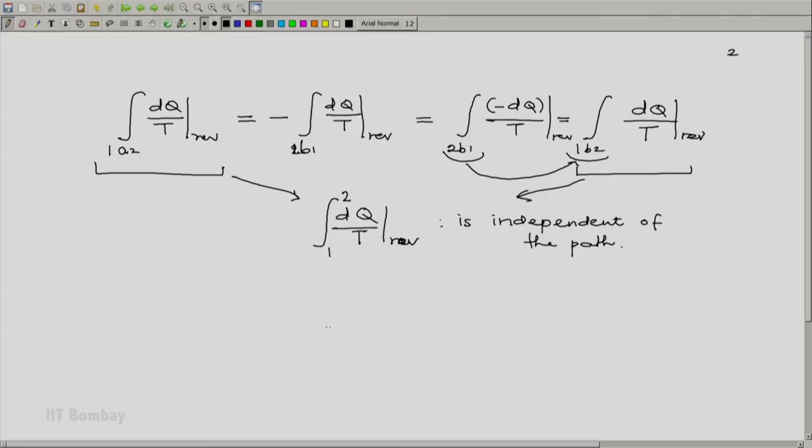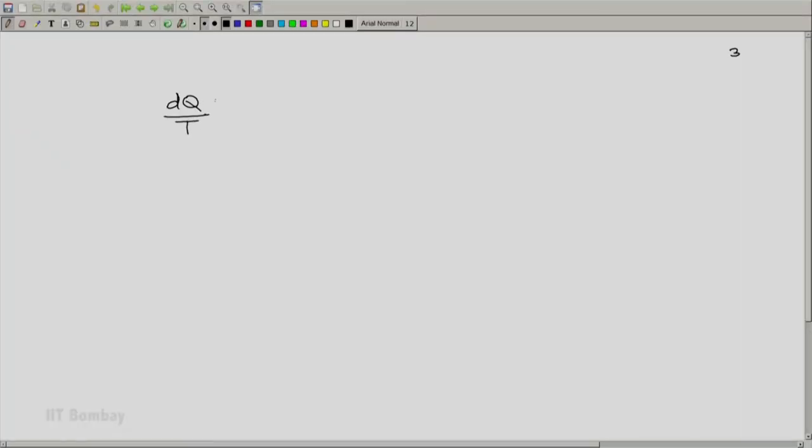So this implies that dq by t for a reversible process element must be an exact differential. Now since dq by t is an exact differential or integral 1 to 2 dq by t being independent of the path, both these things independently mean the same thing.